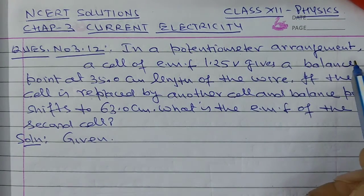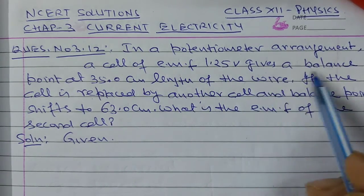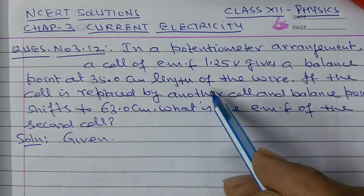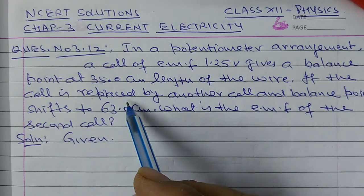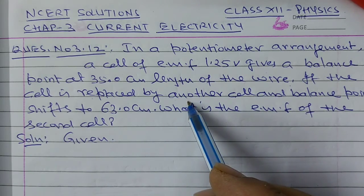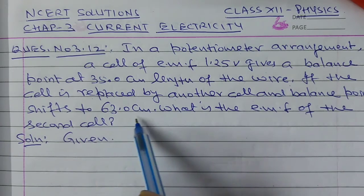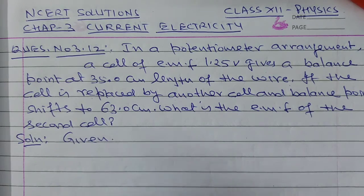In a potentiometer arrangement, a cell of EMF 1.25 volt gives a balance point at 35 cm length of potentiometer wire. If the cell is replaced by another cell and the balance point shifts to 63 cm. What is the EMF of the second cell?